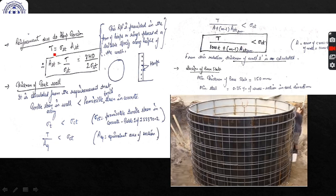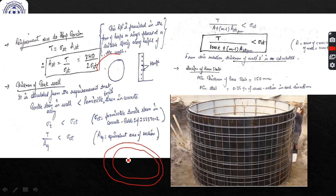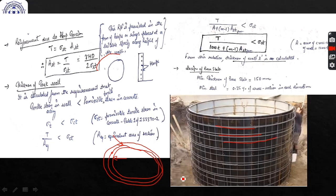Ast = T / sigma_st, where T = gamma·h·D/2. This Ast is the hoop reinforcement provided in the form of hoops or rings placed at suitable spacing along the height of the wall — these are the circumferential reinforcements visible in the tank wall picture.